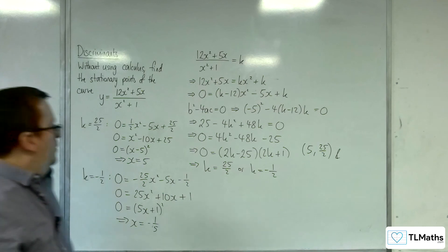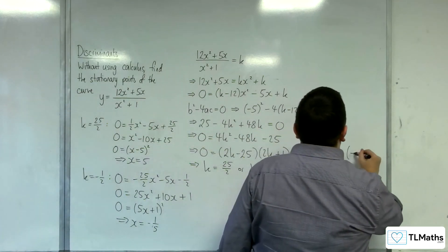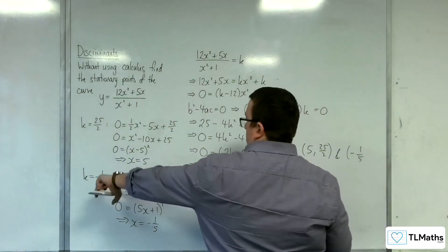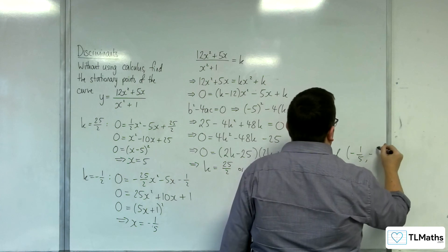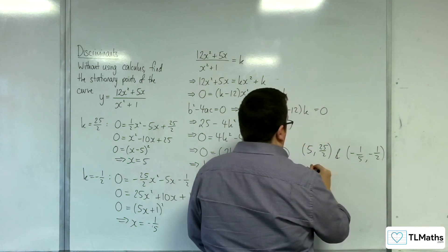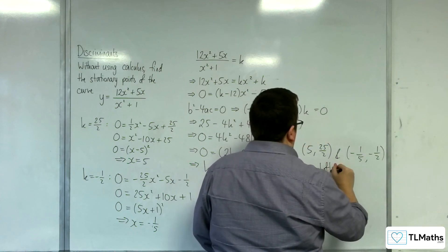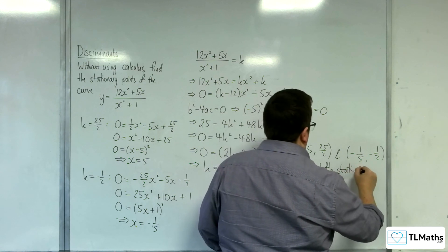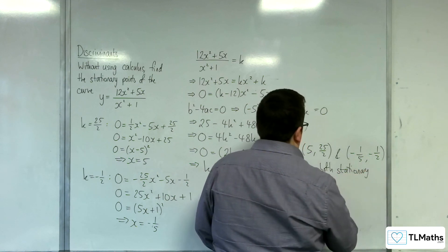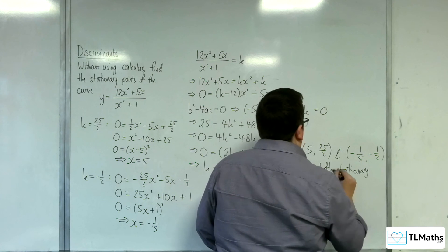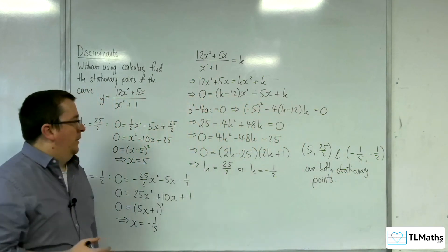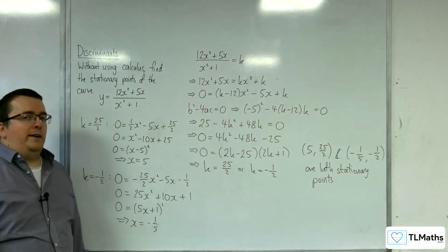So we've got another stationary point at minus 1 fifth, minus 1 half. And so, we've got the two stationary points using no calculus techniques.